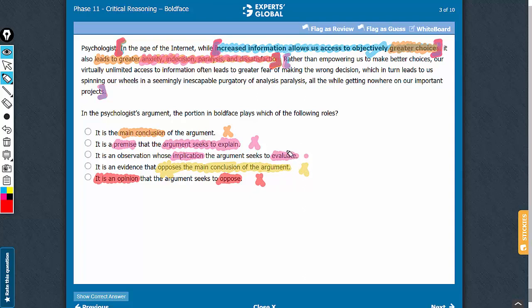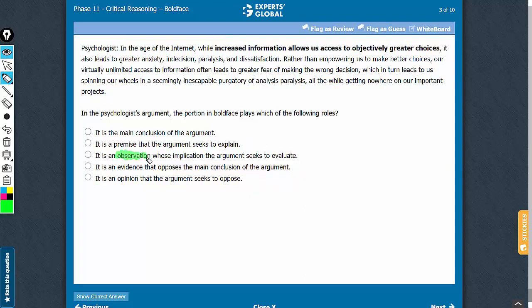Let's confirm answer choice C now. To call this an observation is all right. This is a premise of factual finding and therefore the term observation is perfectly all right. Whose implication the argument seeks to evaluate? Yes, the argument examines the consequences of this finding here, the idea of having objectively greater choices. And then through this complete explanation here, the argument comes up with the overall conclusion here. And therefore yes, the boldface is an observation whose implications the argument seeks to evaluate. The buzzwords here are observation, implication and evaluation. C is the correct answer choice.